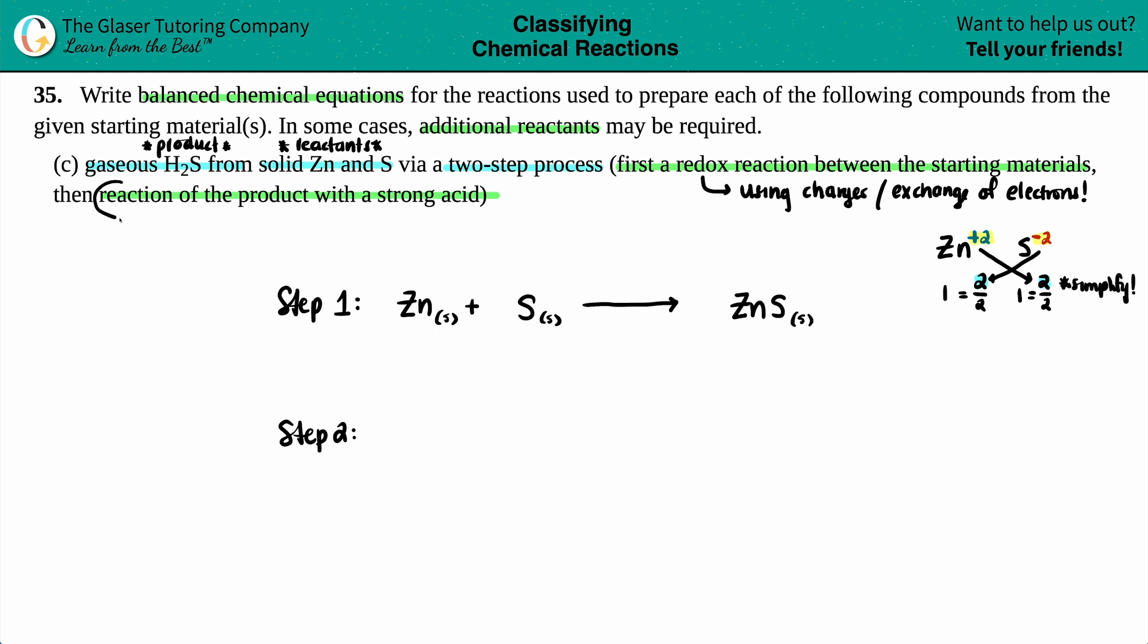Now we have to do the reaction of the product with a strong acid. So the product is ZnS. And we now know that we need some type of strong acid. And we're going to get out the product that we ultimately want, that they said in the beginning. We wanted to produce that gaseous H2S. So we have H2S and that's a gas because they told us that it was gaseous. That's all that they told us. So we know that we're dealing with the reaction of the product, ZnS, with the strong acid. They didn't tell us specifically what the strong acid was. So we have to be creative.